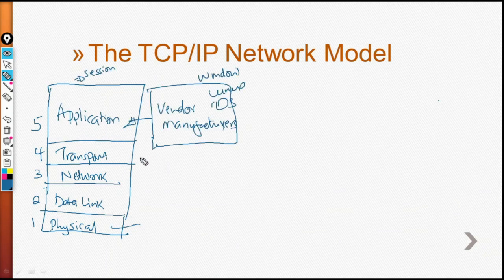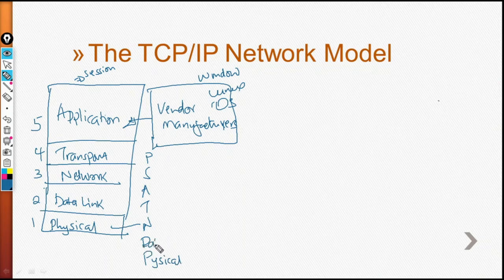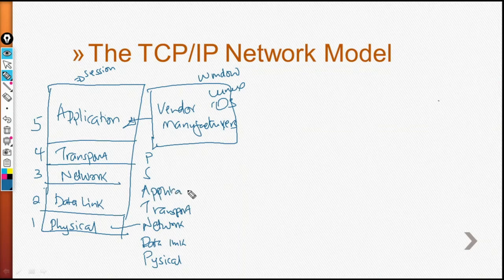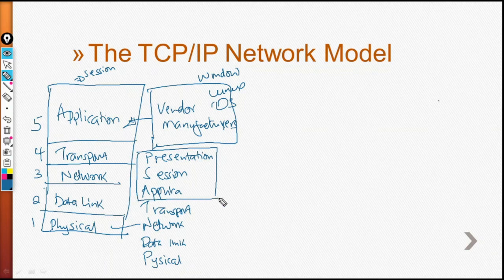There used to be another longer model. In that model we had the physical layer, the data link layer, the network layer, the transport layer, the application layer, session, and presentation. So if you look at this, application, session, and presentation are combined into one single application layer in the TCP/IP model.